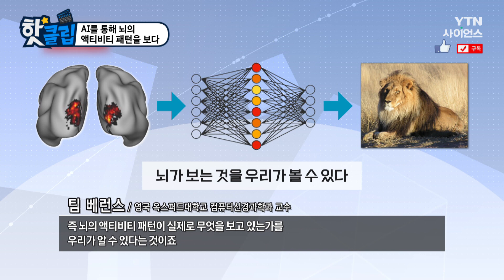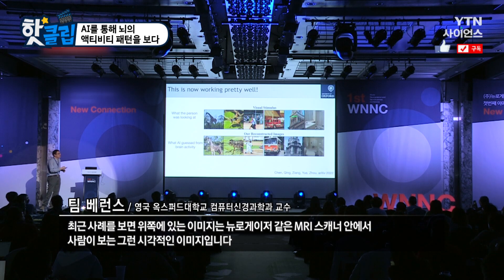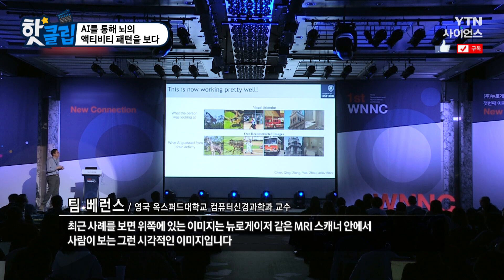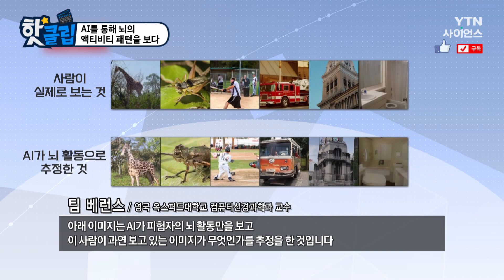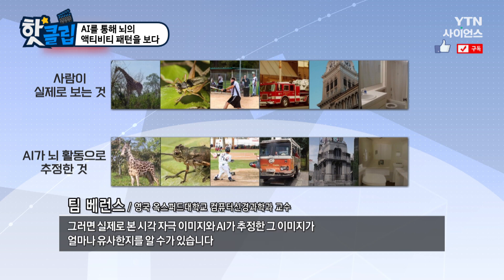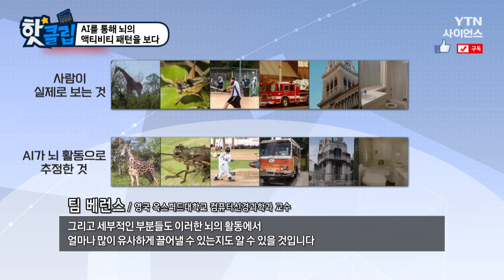Here's the state-of-the-art most recent example, where the top row shows an image that a person lying in an MRI scanner is actually looking at, just like the one in NeuroGazer. The bottom row is an AI that can only see the person's brain activity guessing what the person is looking at. Look how amazingly similar it is — we have a giraffe, whatever this strange insect is, a fire engine. We can really see with incredible detail from the brain activity what's inside the person's thoughts.